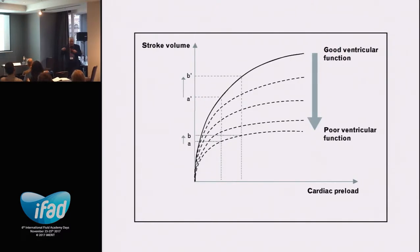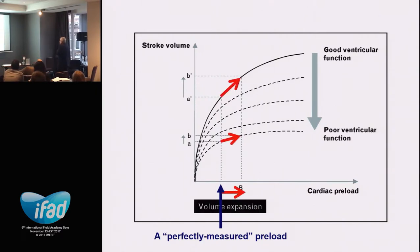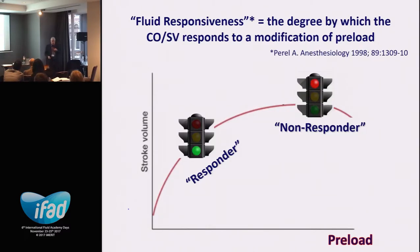When we give fluid, we expect the stroke volume to go up. But how do we decide whether to give fluids or not? Historically we relied on cardiac preload parameters — static parameters like central venous pressure or wedge pressure. But even if we find the perfectly measured preload parameter, such as end-diastolic area on echo, and we give fluid, some patients would increase cardiac output and some would not. So preload measurement is not enough, by definition, to predict the response to fluids. What we are actually looking for is the slope of the left ventricular function curve.